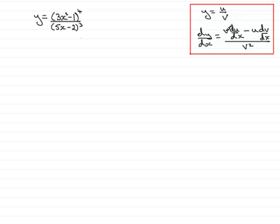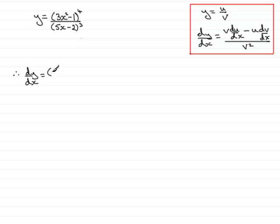In other words, it's the bottom of the fraction multiplied by the differential of the top, minus the top multiplied by the differential of the bottom, all divided by the bottom squared. So to find dy/dx, we start with v — the bottom of the fraction — placing (5x minus 2) all cubed in brackets.